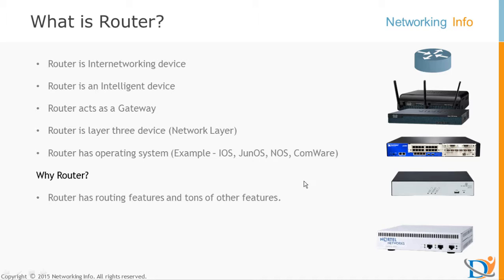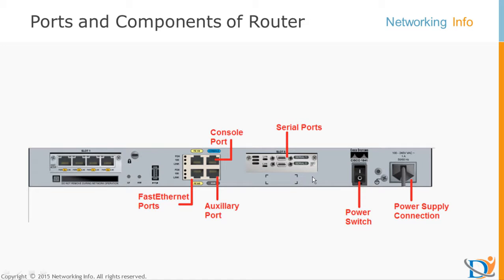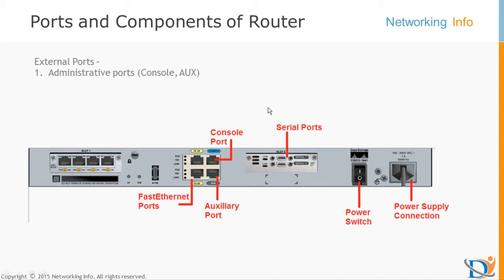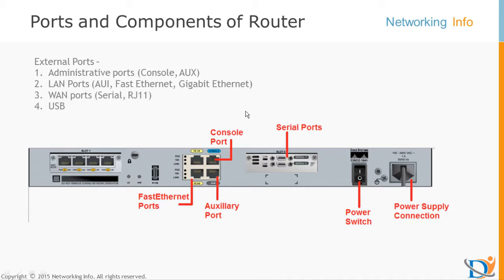We must understand that a router has an operating system. Now let's talk about the ports and components of the router. I categorize all ports into some divisions: external ports and internal ports or internal circuits. External ports have some categories — administrative ports, LAN ports, WAN ports, USB ports, and some other types of ports you might see on certain devices.